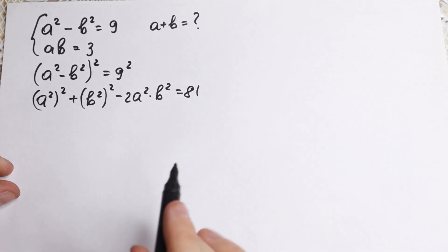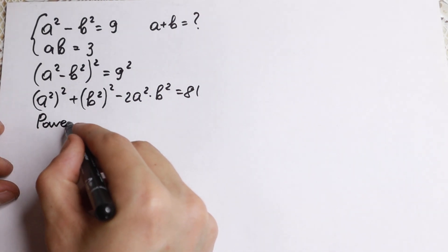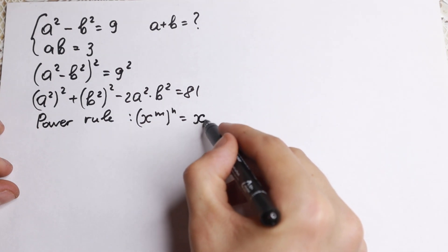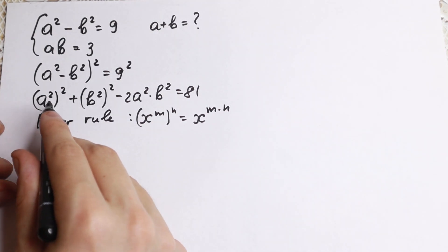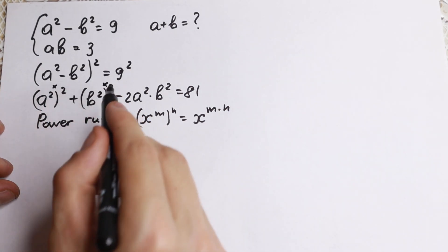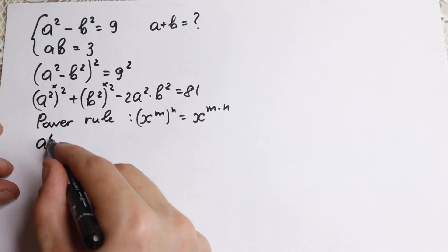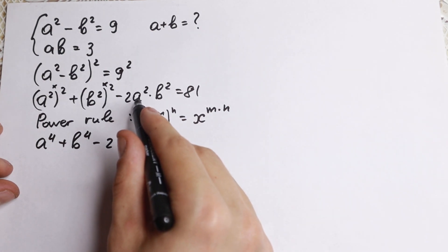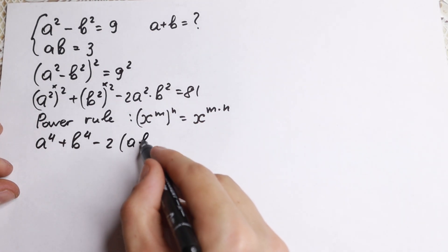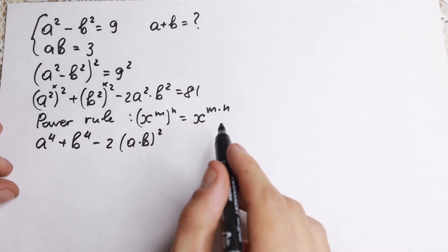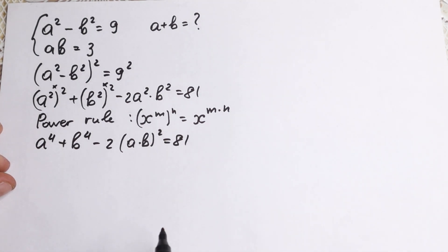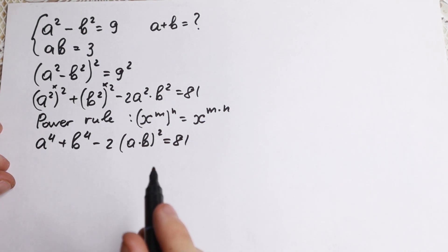Right now we can see a really interesting moment, because if we know the power rule: x to the power m raised to the power n equals x to the power m times n. We need this rule here — multiplying exponents. So we will have a to the fourth plus b to the fourth minus 2, and I write it as a times b squared. This is basic school algebra, and we go step by step to our answer.